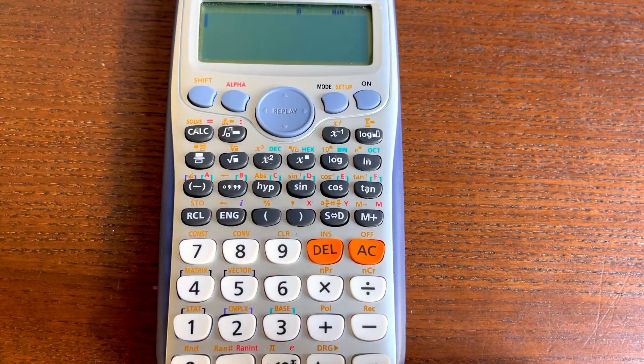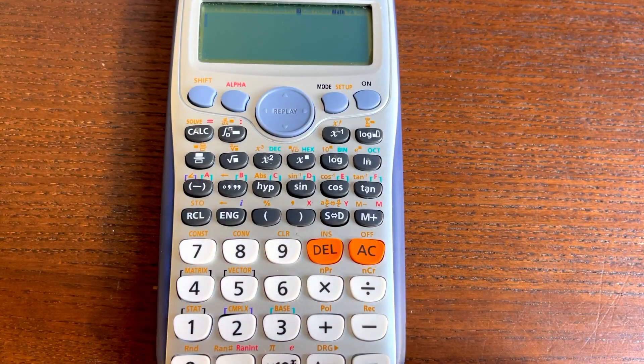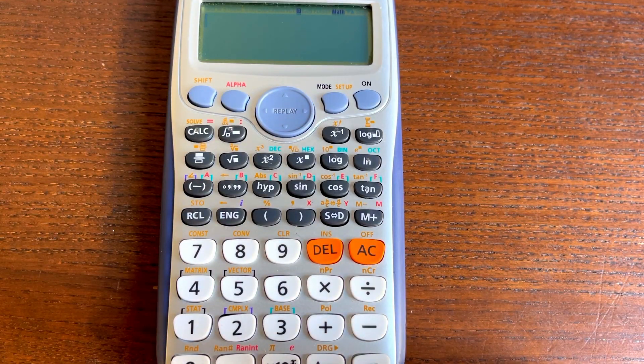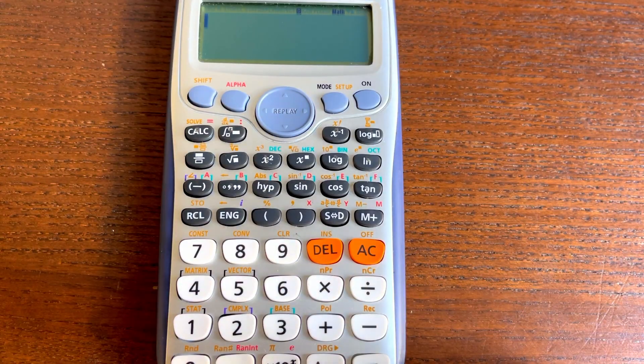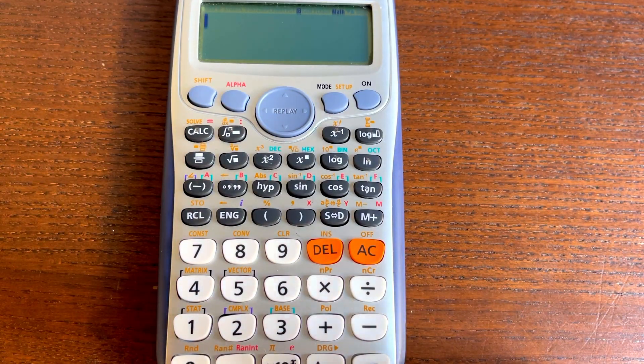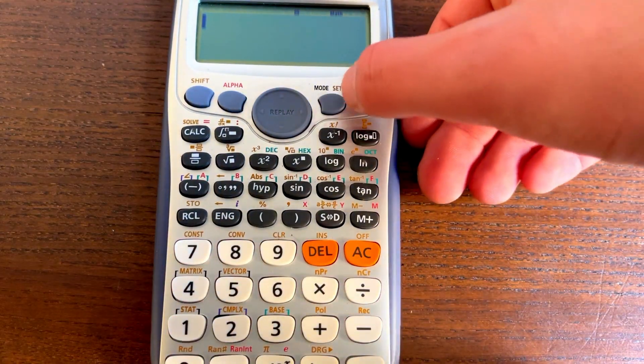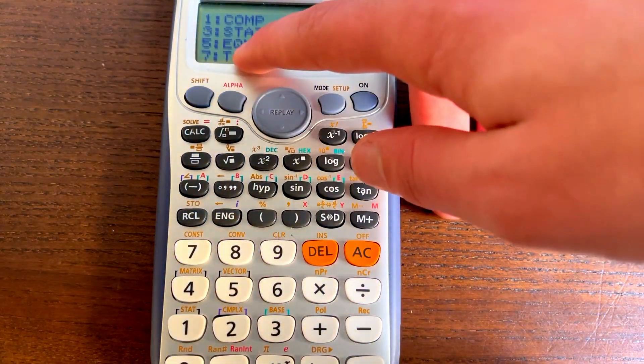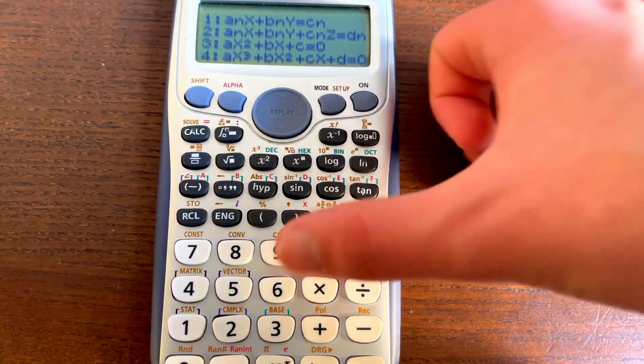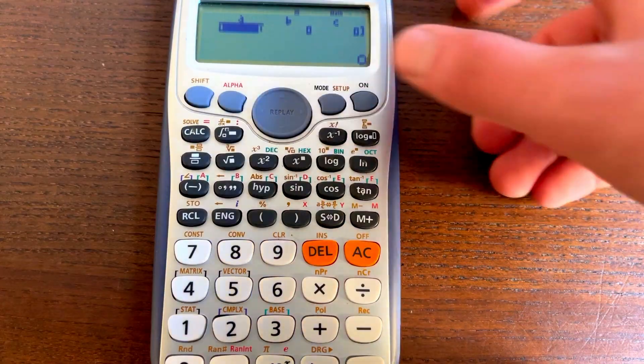Tip number two is working out the quadratic equation through the calculator, and it's actually really useful because you don't have to write in your minus B plus or minus all of that. You can literally just sub in your values and you get your answer in seconds. So what you have to do is you click mode setup right here, then you click 5, which is the equation tab, and then you click 3, which is the quadratic equation in particular.